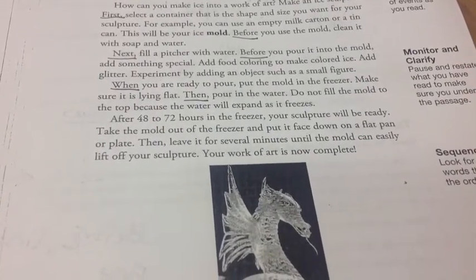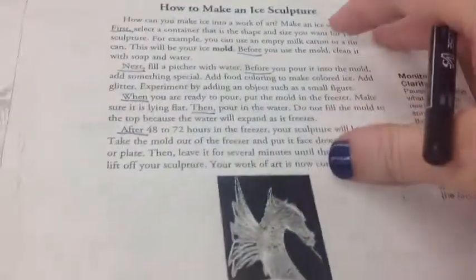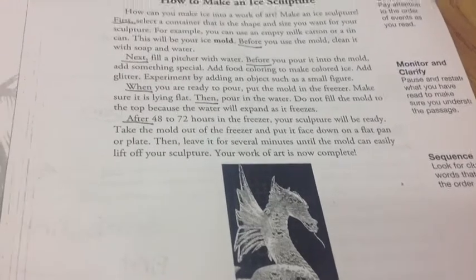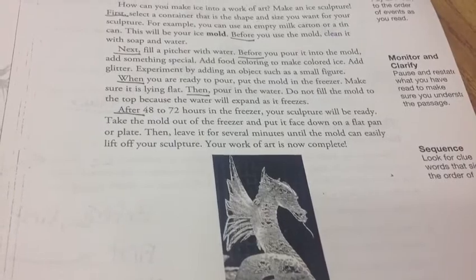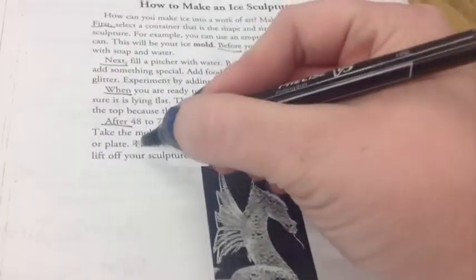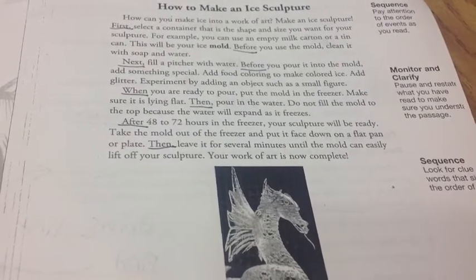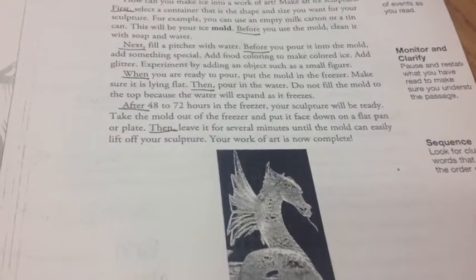After 48 to 72 hours in the freezer, your sculpture will be ready. I see the word 'after,' which also indicates time or order, so I'm going to underline it. Take the mold out of the freezer and put it face down on a flat pan or plate. Then leave it for several minutes until the mold can easily lift off your sculpture. Your work of art is now complete. So we found a lot of clue words and we're ready to look at the questions on the back.